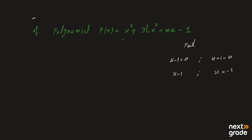अब हम lines draw करेंगे और polynomial के coefficients लिखेंगे. x cube का coefficient 1 है, x square का coefficient 3L है, x का coefficient M है, और constant minus 1 है. अब हम 1 पे divide करेंगे. पहला number 1 वैसे आएगा, 1 multiply 1 = 1; 3L plus 1 आएगा.